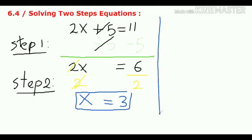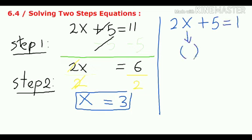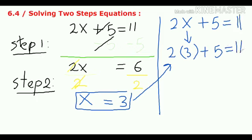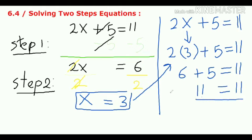To check, we go back to the original equation and replace x with the solution, which is 3. We have 2 times 3 plus 5 equal 11. 2 times 3 is 6, plus 5 equals 11. 6 plus 5 equals 11 — correct! So this is the solution.